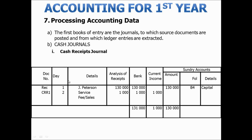In the first example we need to specify the document number. In this case we are referring to a capital investment into the business. We will specify the day that the transaction occurred, the details of this transaction, and then under analysis of receipts, the amount affecting the transaction.